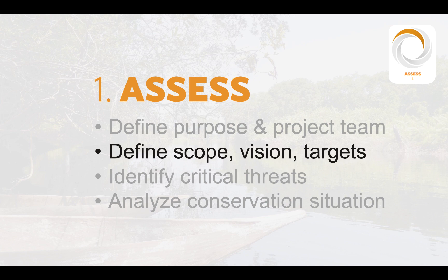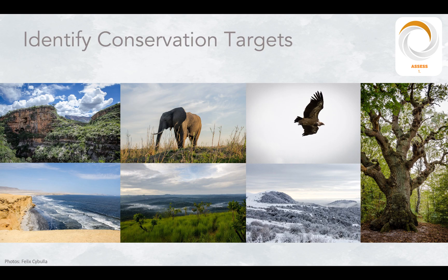After defining our planning, purpose, and team, we need to define our project scope, vision, and targets. The scope is the geographic area or theme that our project intends to affect. The vision is the ultimate condition that we're working to achieve. And the biodiversity conservation targets are the species and ecosystems that we want to conserve, intended to represent the needs of the broader set of natural resources occurring within our project area.